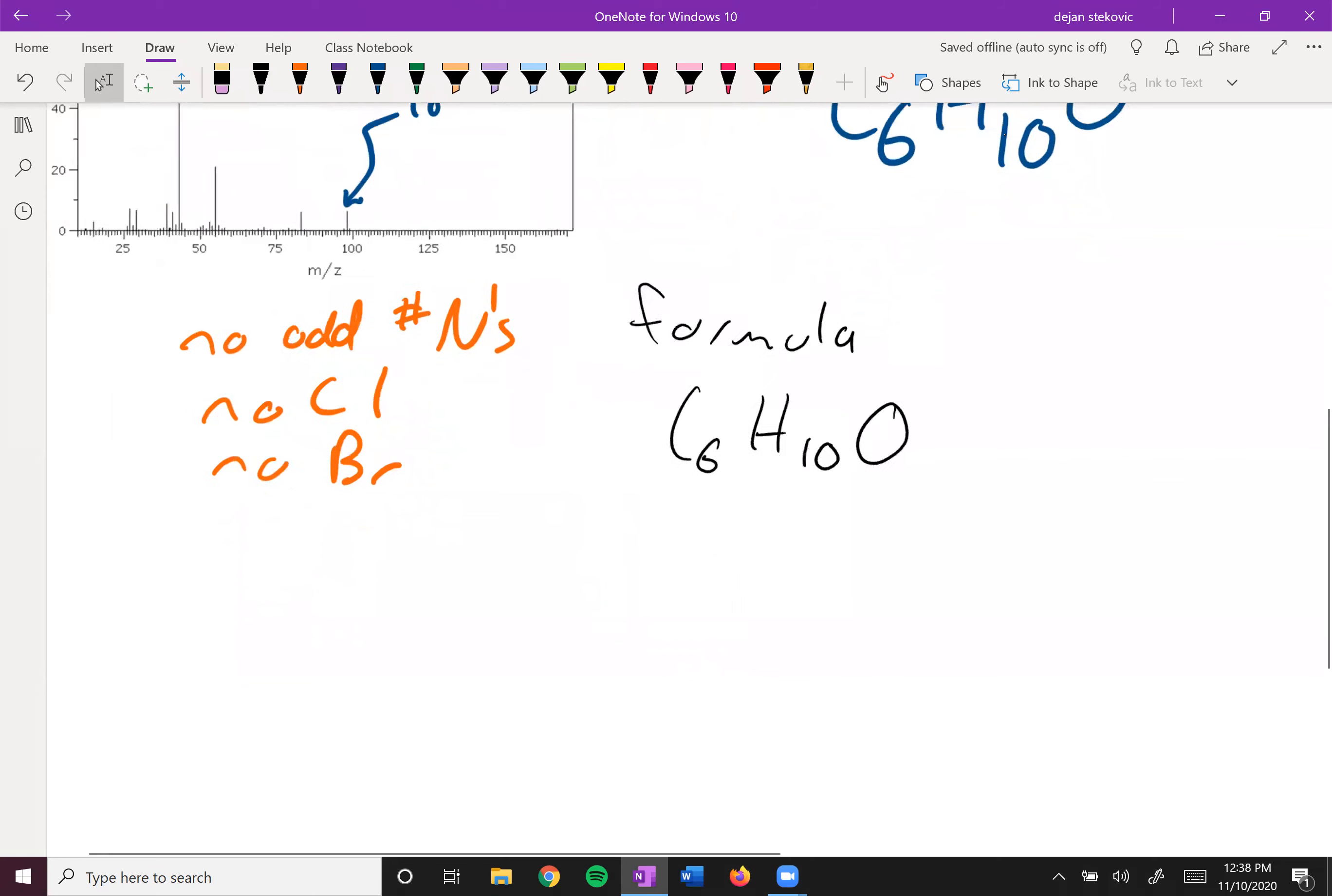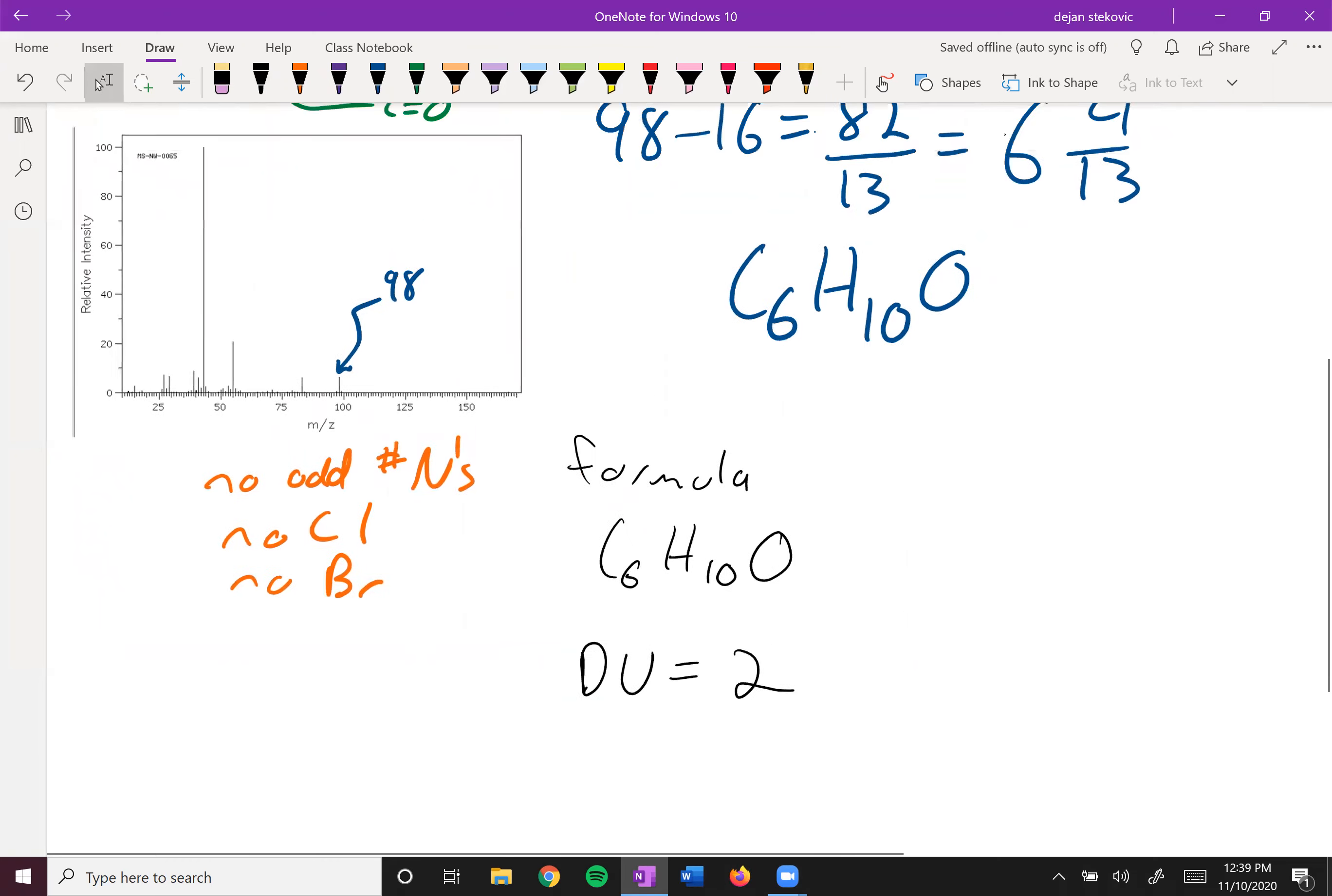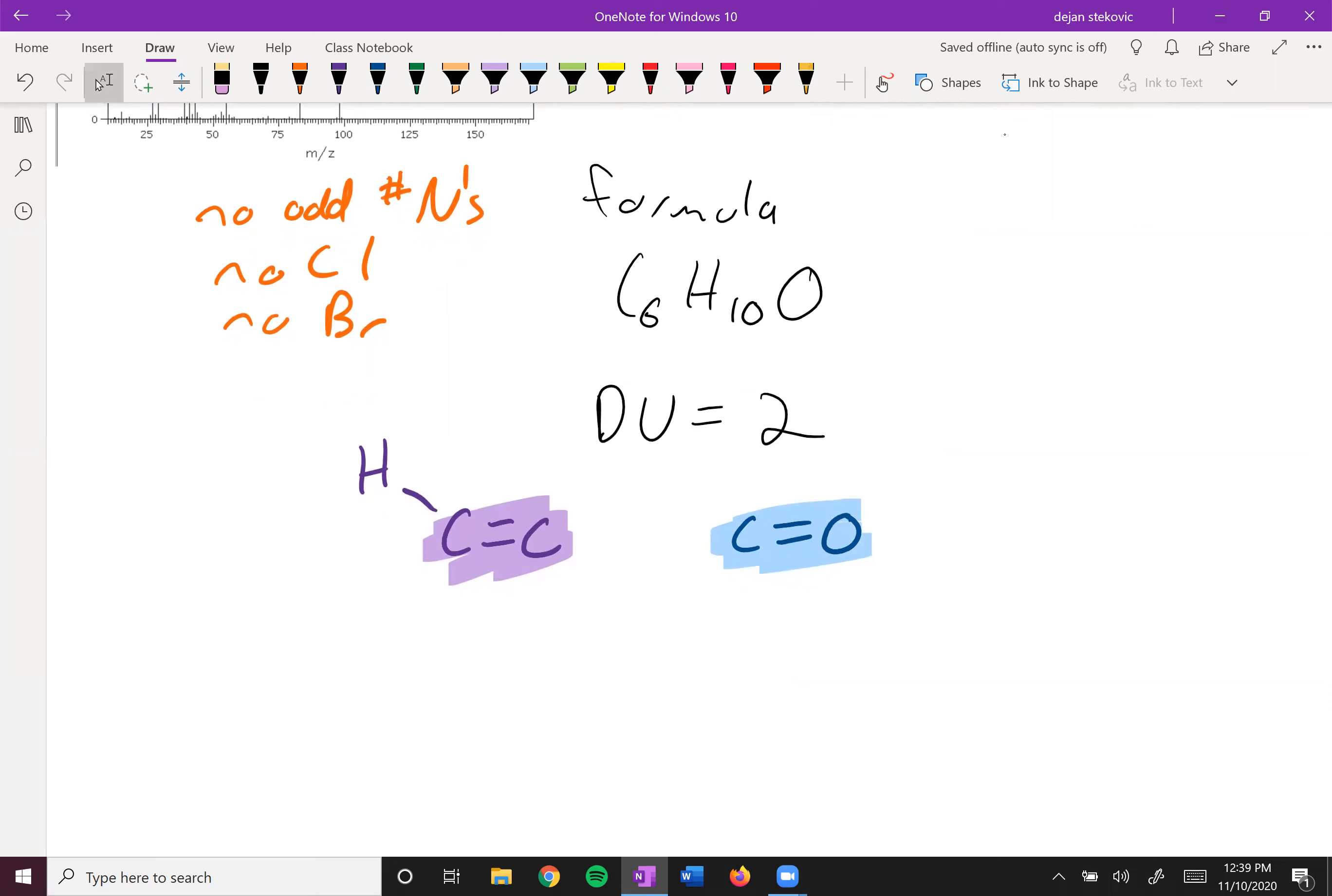Next thing we're thinking about is our degrees of unsaturation. We have six carbons - that's times 2 is 12, plus 2 is 14. We only have 10, so we're missing two pairs of hydrogens, so we know we have two degrees of unsaturation. From our IR spectra we know we have a carbon-carbon double bond with at least one H, and we also have a carbon-oxygen double bond. Here's one degree of unsaturation, here's the other degree of unsaturation. We can have no more degrees of unsaturation - that means no rings can occur and no other pi bonds can occur either.